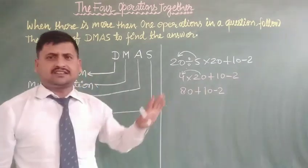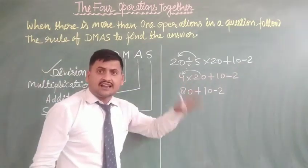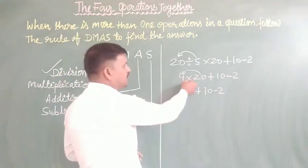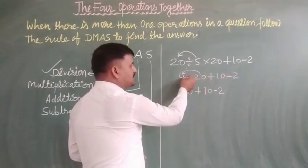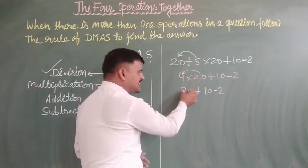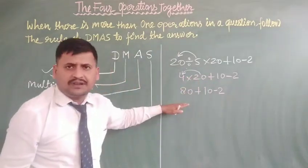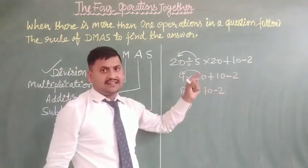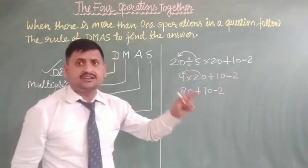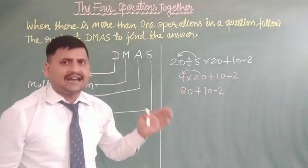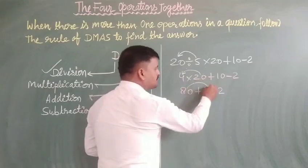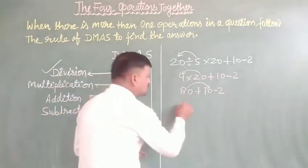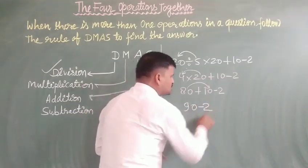Write down in a proper sequence. And then after multiplication, the third work is addition. 4 multiplied by 20 equals 80. Write 80 down in your work below, and write the rest of the numbers in proper order. Then: 80 plus 10 — the third work is addition. 80 plus 10 is equal to 90.